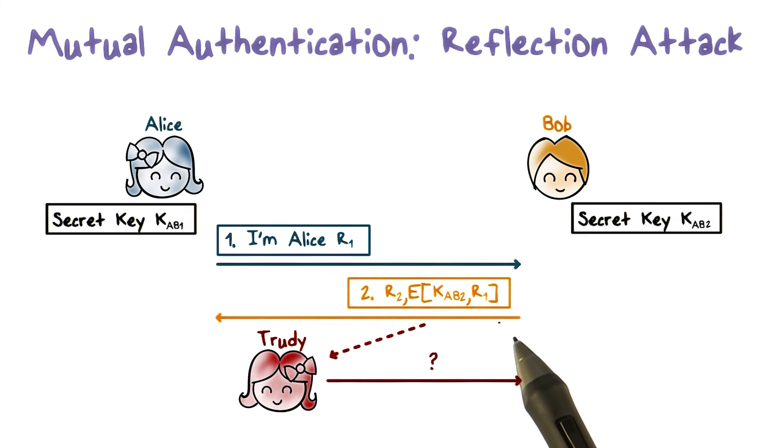Therefore, the ciphertext from Bob is encrypted using KAB2, and Bob is going to expect a ciphertext using KAB1. Therefore, even though Trudy can intercept this ciphertext, this ciphertext is produced using KAB2. She cannot simply send it back to Bob because the ciphertext sent to Bob must be encrypted using KAB1.